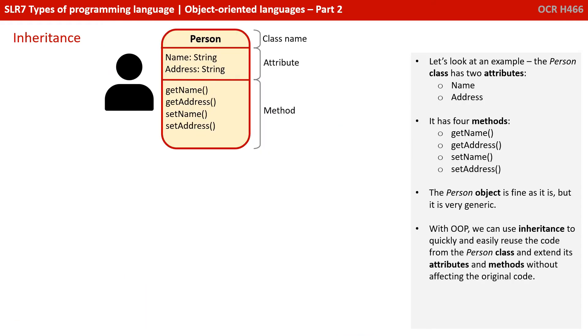Let's take a look at an example. Here we have the person class, and it has two attributes: name and address. And it has four methods — two for getting the name and address, and two for setting the name and address.